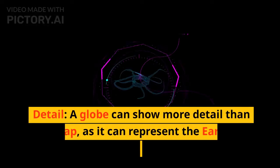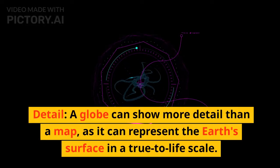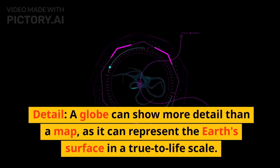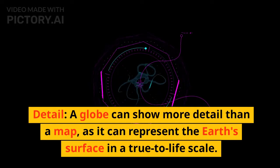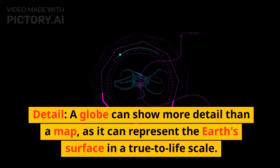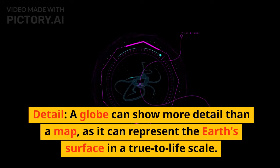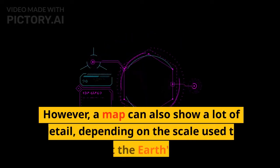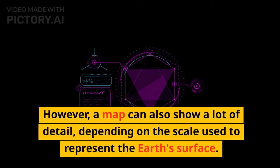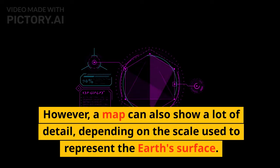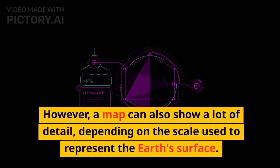5. Detail: A globe can show more detail than a map, as it can represent the Earth's surface in a true-to-life scale. However, a map can also show a lot of detail, depending on the scale used to represent the Earth's surface.